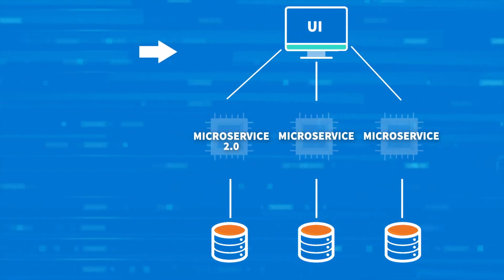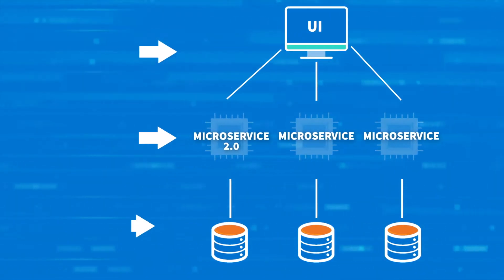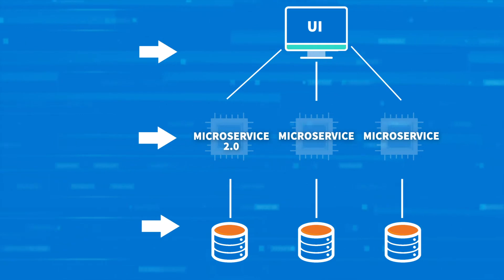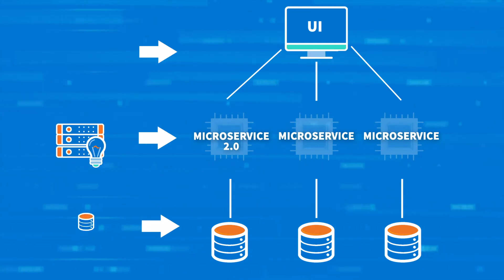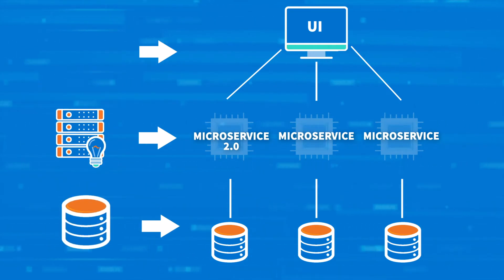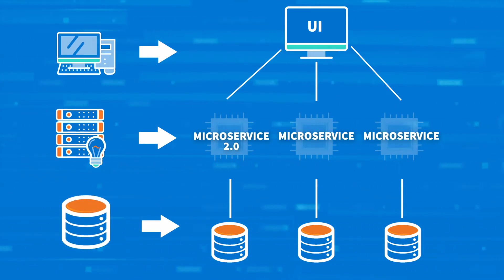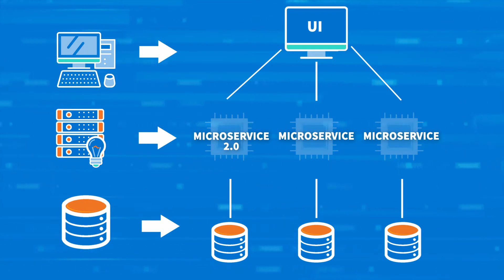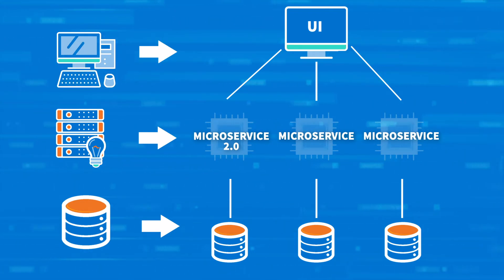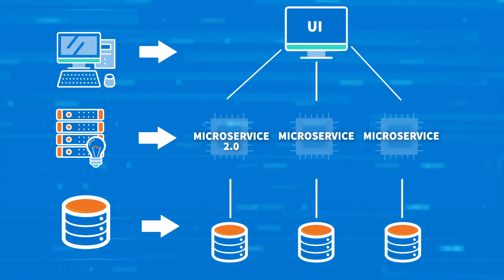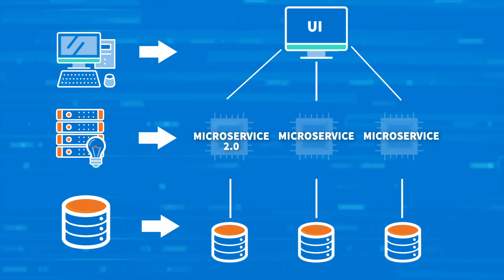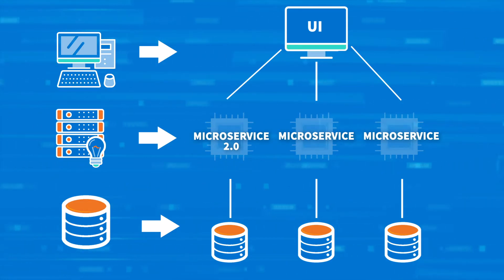Similarly, the three-tier architecture is a type of software architecture in which the functional process logic, data access, computer data storage, and user interface are developed and maintained as independent modules on separate platforms. The tier in this case can also be referred to as a layer.